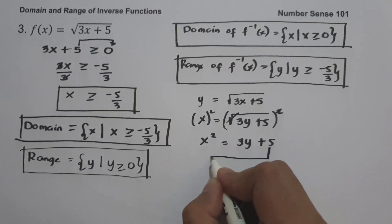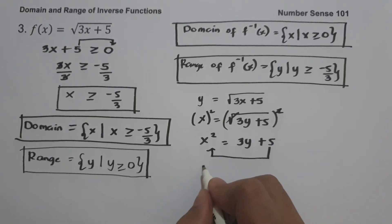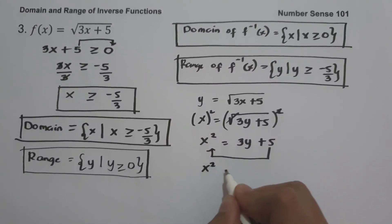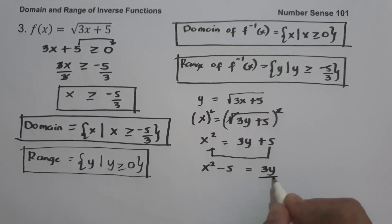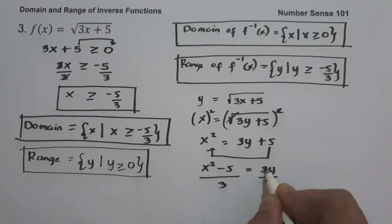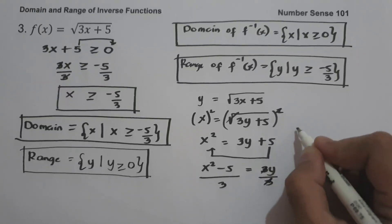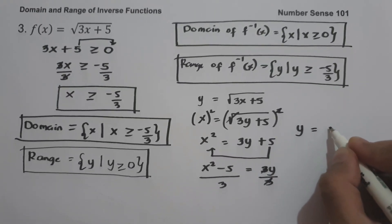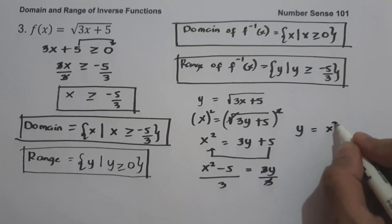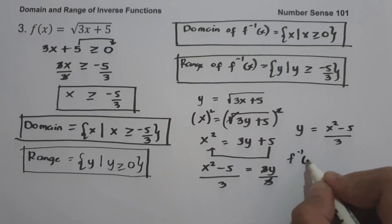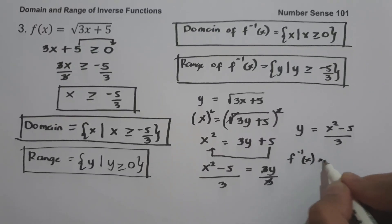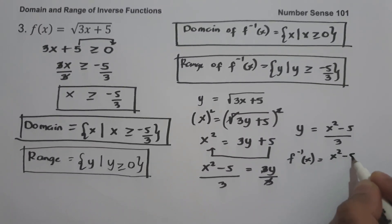Moving 5 to the side of x squared gives x squared minus 5 equals 3y. Dividing both sides by 3, we get y equals x squared minus 5 all over 3. This is the inverse of the given function.